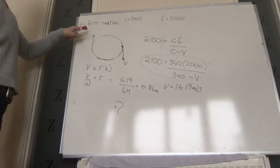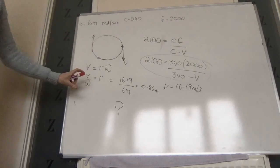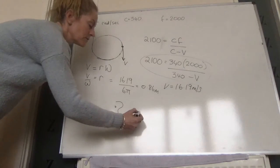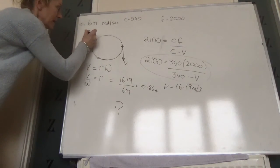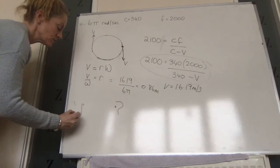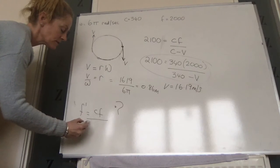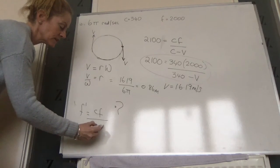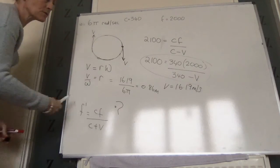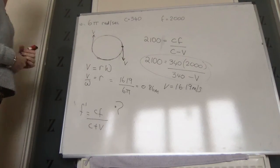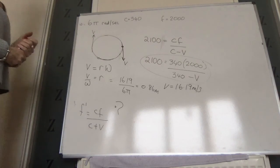The last part asks for the lowest note heard by the observer. The lowest note occurs when the source is moving away at speed V, so it equals C·F over (C plus V), and we know all those values. Hopefully that allows you to do all the questions for homework from the next section. Thank you.